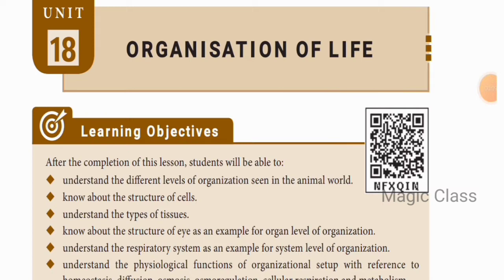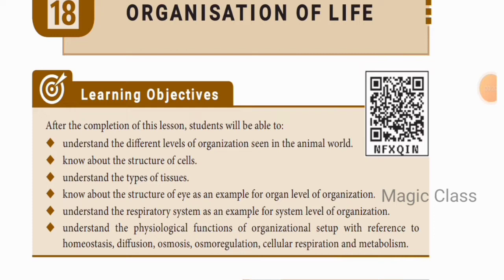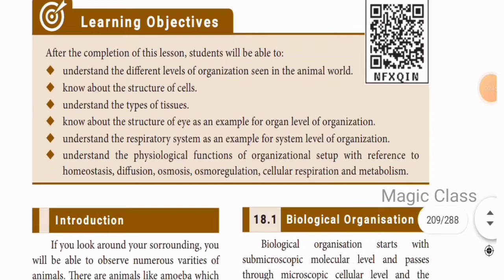Welcome back to Magic Class. In this video, we are going to look at Standard 8th Science, Unit 18: Organization of Life. This particular lesson will be covered in three different videos. In this first video, we will look at the objectives: understanding the different levels of organization seen in the animal world, the structure of cells, types of tissues, and the structure of the eye as an example of organ-level organization.